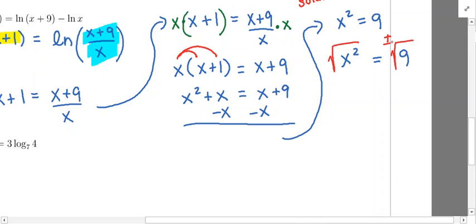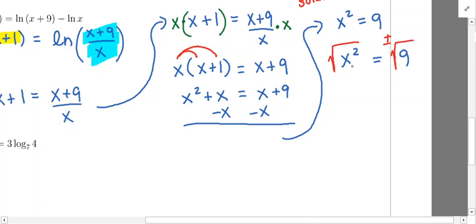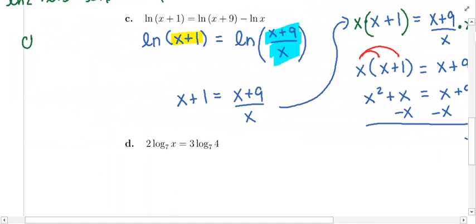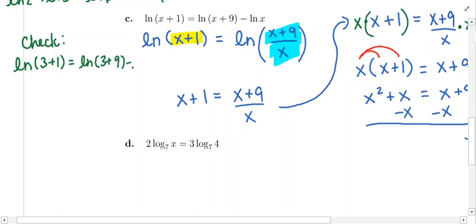The square and the square root cancel, leaving x equal to plus or minus the square root of 9, which is 3. So we have two potential solutions; we need to check them in the original equation. We're worried about taking the logarithm of something negative or zero. Checking positive 3: we get the natural log of 4 equal to the natural log of 12 minus the natural log of 3. We're taking the logarithm of something positive every single time, so that is okay.